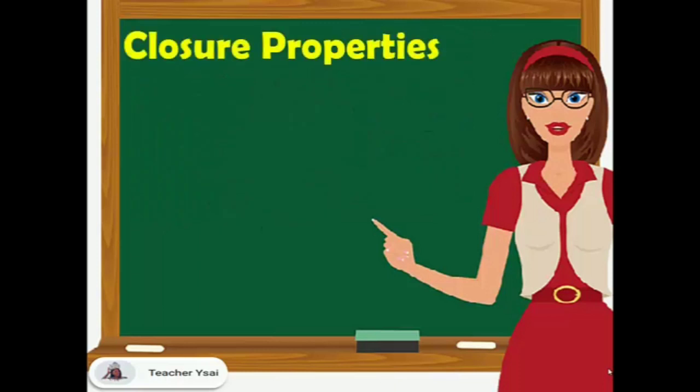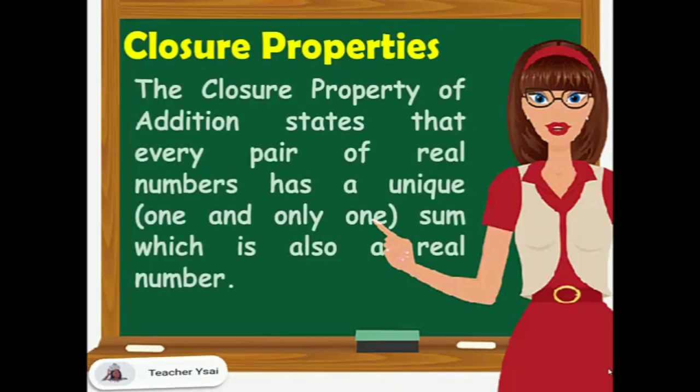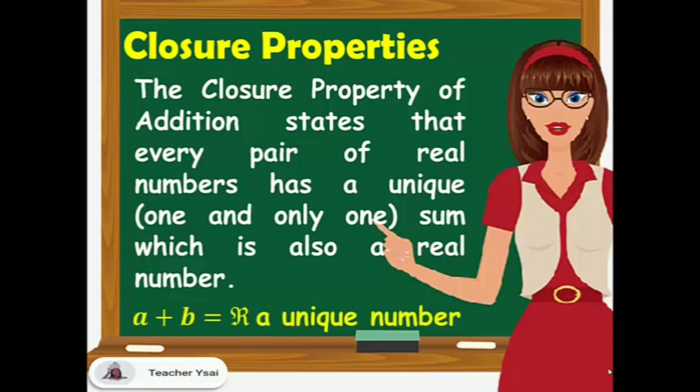First, we have closure properties. The closure property of addition states that every pair of real numbers has a unique — one and only one — sum, which is also a real number. That is, a plus b equals r, or real number, which is a unique number.